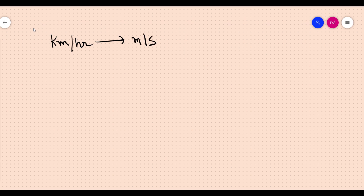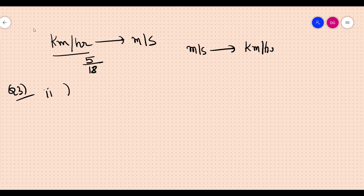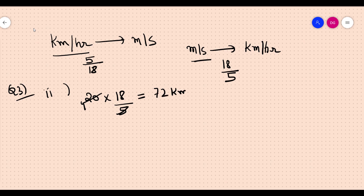Question three: Express the following speeds in kilometers per hour. To convert meter per second into kilometer per hour, multiply by 18 upon 5. So 20 meters per second into 18 upon 5: 5 divides into 20 giving 4, and 4 into 18 gives 72 kilometers per hour.